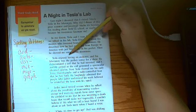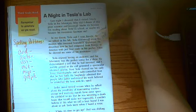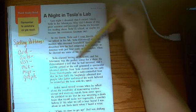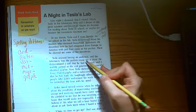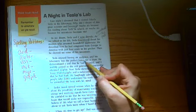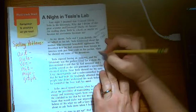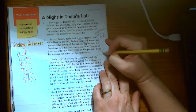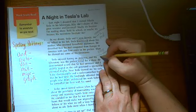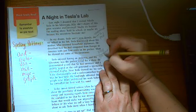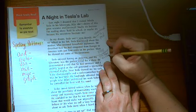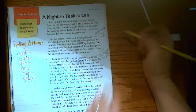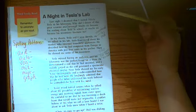Tesla enjoyed having an audience and his laboratory was the perfect venue for a show. So venue, as you remember, is a place. There you have an event. A wedding is at a venue. A show is at a venue.